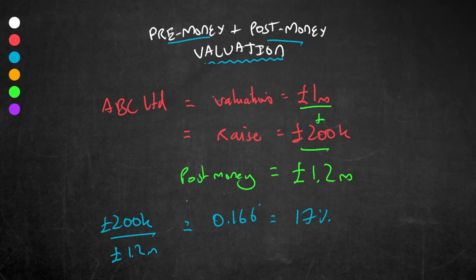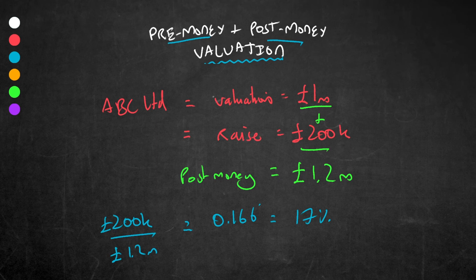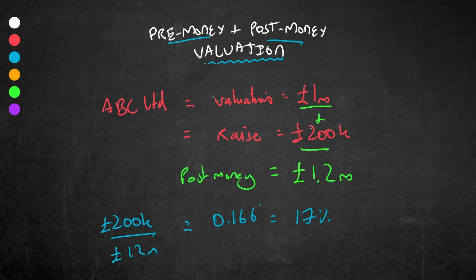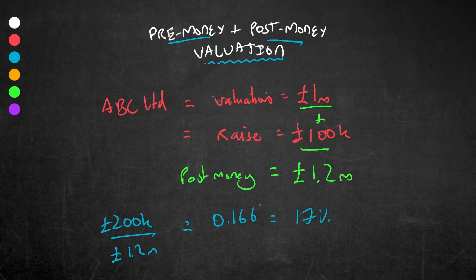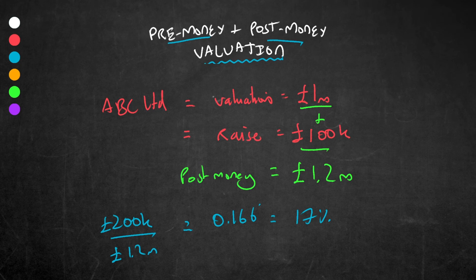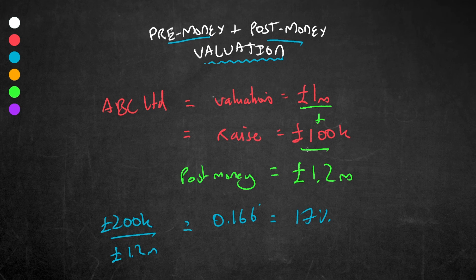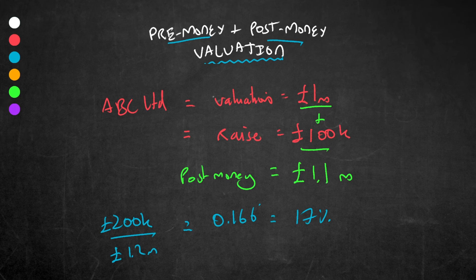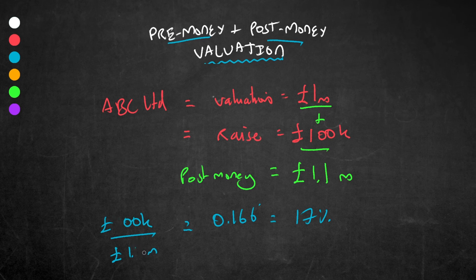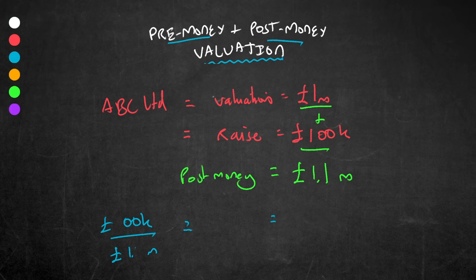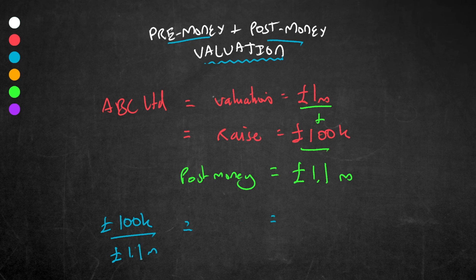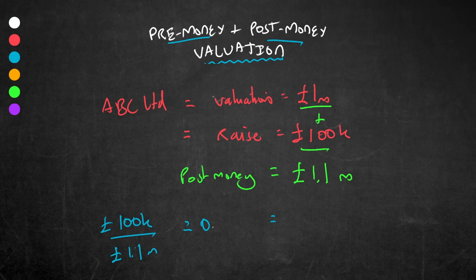What happens, however, if the investor changes mind and doesn't invest 200,000, but invests 100,000? Well, let's replay this scenario. He puts in 100,000, so the post-money valuation is not 1.2 but 1.1 million. By changing the sum at the bottom, we can see that 100,000 divided by a post-money valuation of 1.1 million is 0.09 or 9% of the business that he owns.